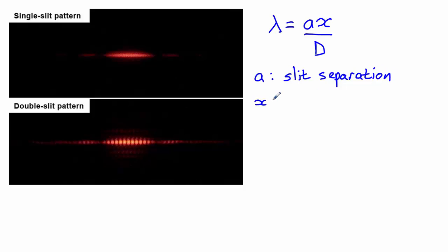x refers to the separation between the fringes on the screen. So that is, for example, the distance from this point here to this point here.